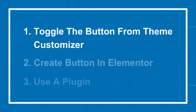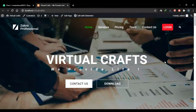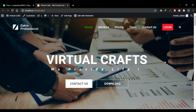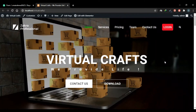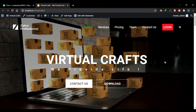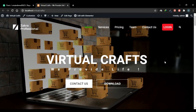The second way is to create a back-to-top button using Elementor, and the third way is to create one using a plugin. We'll start with the first method — toggling the setting in our theme customizer for the back-to-top button.